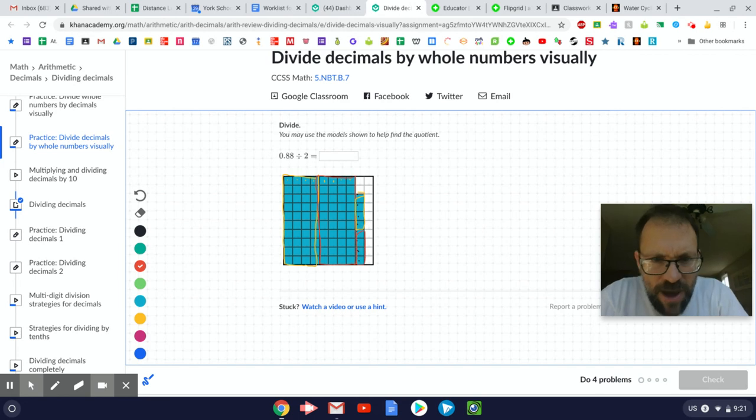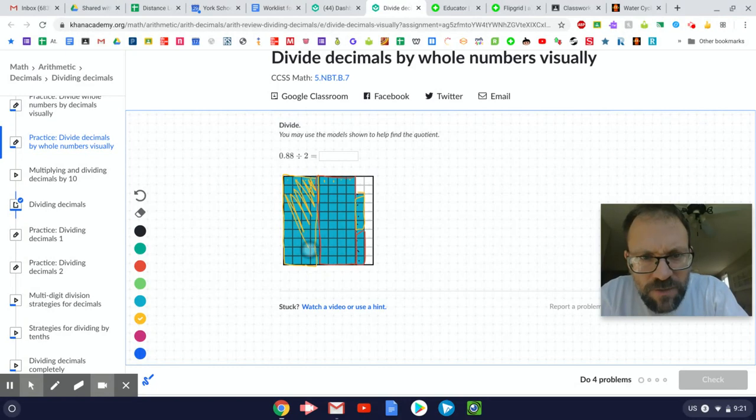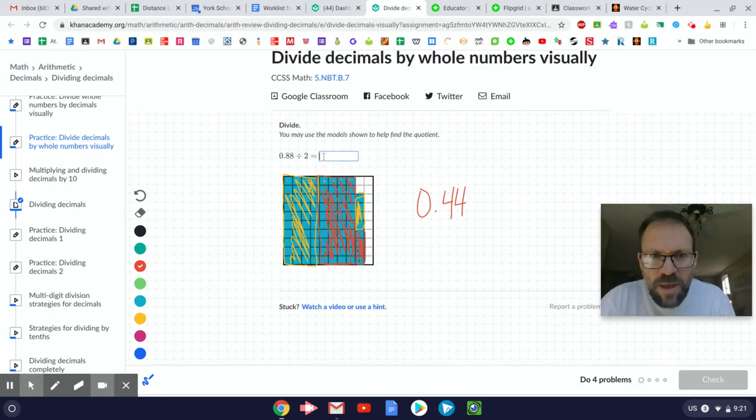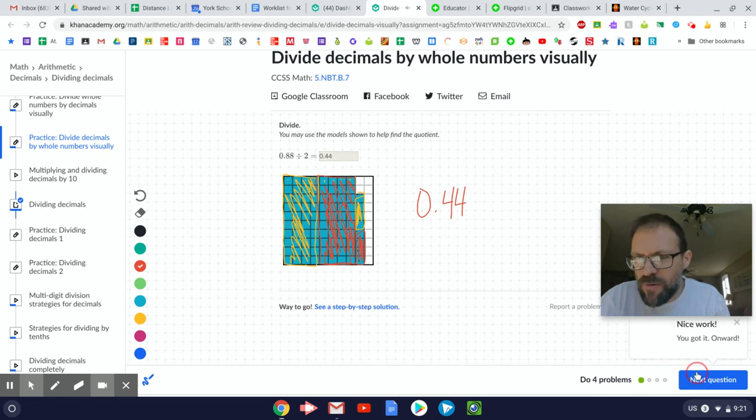And so now I have, in yellow, forty hundredths plus four is forty-four hundredths. And in red, I have forty hundredths, it's four times ten, right, forty hundredths plus four more, forty-four hundredths. So I have two equal groups of forty-four hundredths. And so that's what I'm going to put into my answer. I'm going to put zero and forty-four hundredths. And then I'm going to hit check. There we go. That's one way to divide visually.